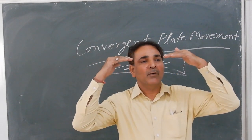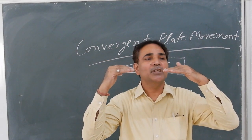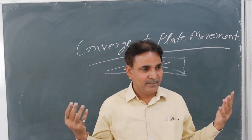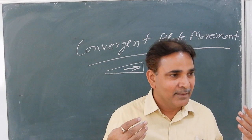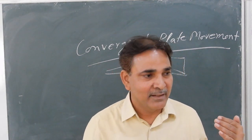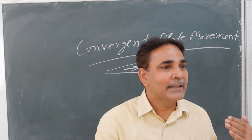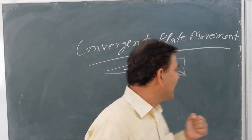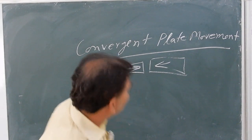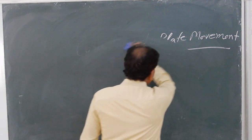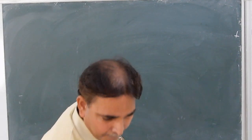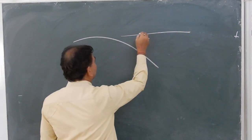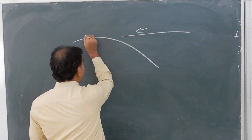When one plate is oceanic and another is continental, the oceanic plate will subduct. But if both plates are continental or both are oceanic, the plate with higher density will subduct and the plate with lower density will be the overriding plate. The subducting plate dips beneath the overriding plate.